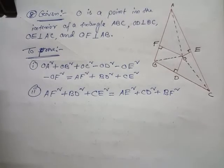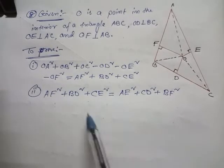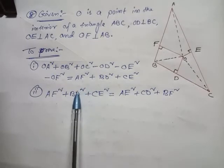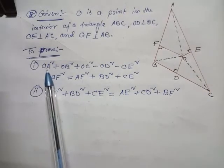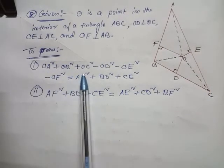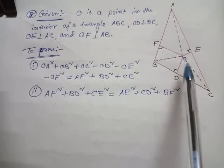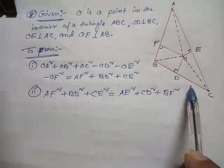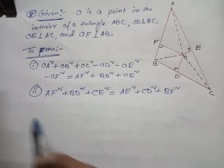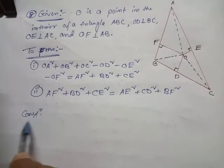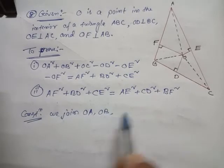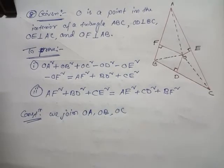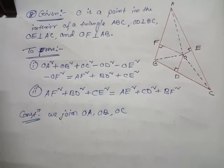As you can see in the video, this is the diagram for question number 8. The given part and two proof portions are written from the main book. Here I have joined OA, OB, and OC, which we need to introduce into the proof. Joining OA, OB, and OC is the construction part. Now we are going to prove the first portion, Roman I.